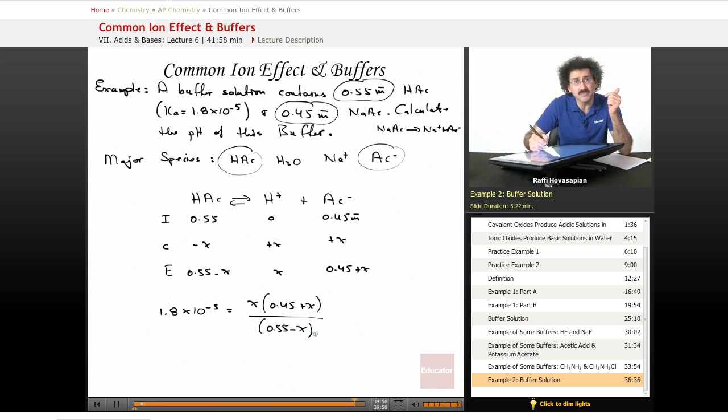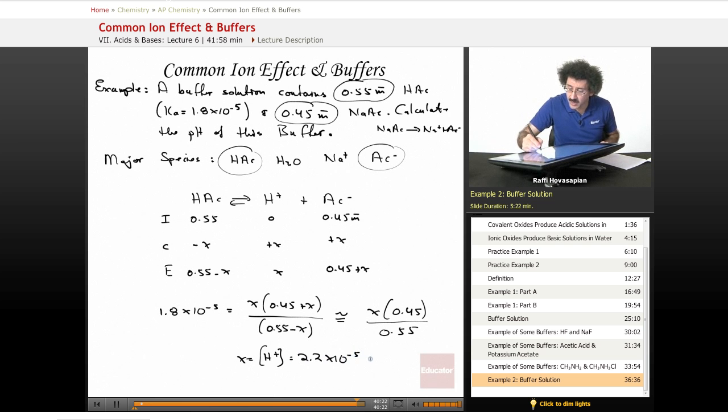We're just crunching numbers. This is probably going to be pretty small. X is pretty small compared to the 0.55 and the 0.45. So it's a reasonable approximation to go X times 0.45 divided by 0.55. When we solve for this, we get a hydrogen ion concentration of 2.2 times 10 to the negative 5, which implies that the pH is equal to 4.66. There we go.